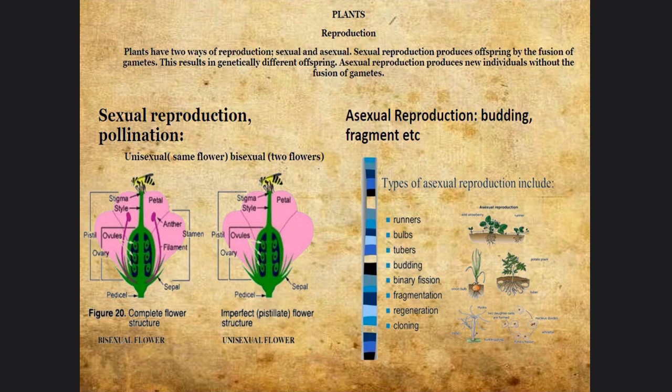For instance, bulbs like potatoes don't require sexual reproduction. Fragmentation is like cutting a small section of the plant or a branch and then replanting it — it will be identical to the original plant. Binary fission is what we know especially in bacteria: it basically creates an identical cell to itself.